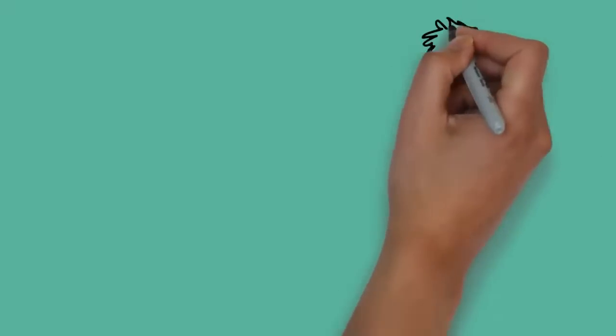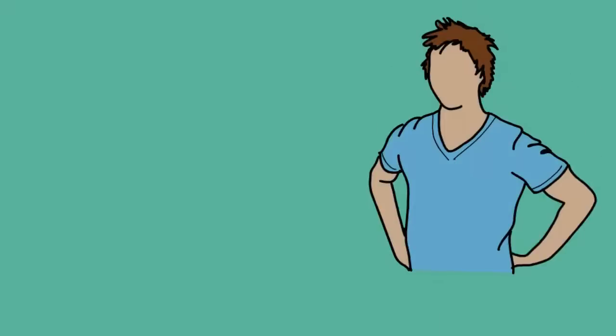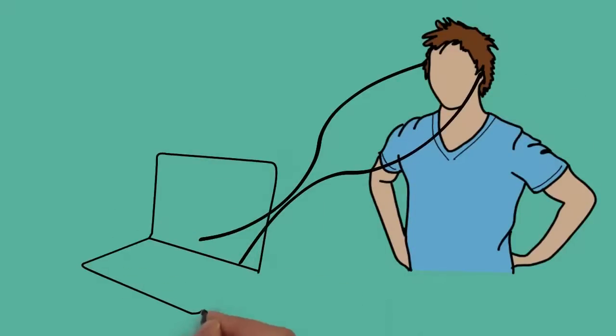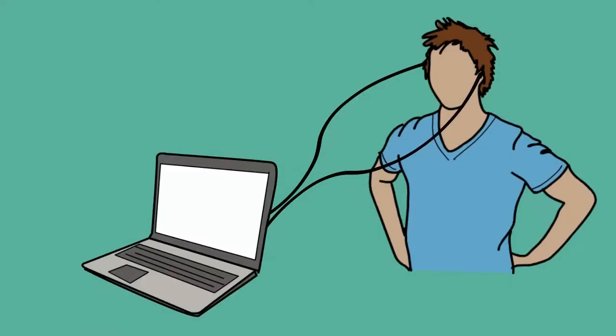How do you do neurofeedback? First, we put sensors on your head. Commonly, we measure your EEG brain activity with a special computerized system.